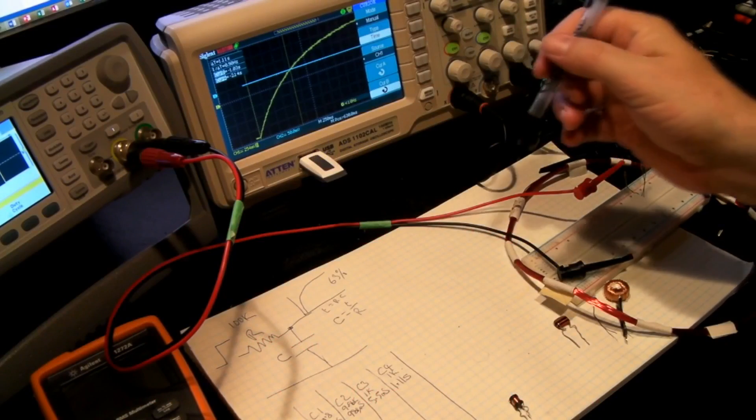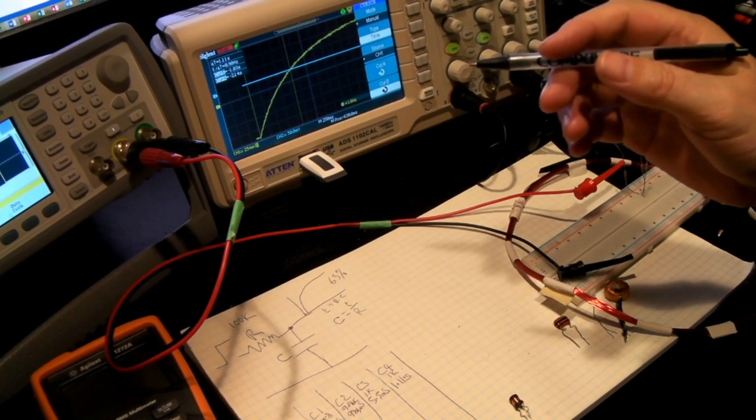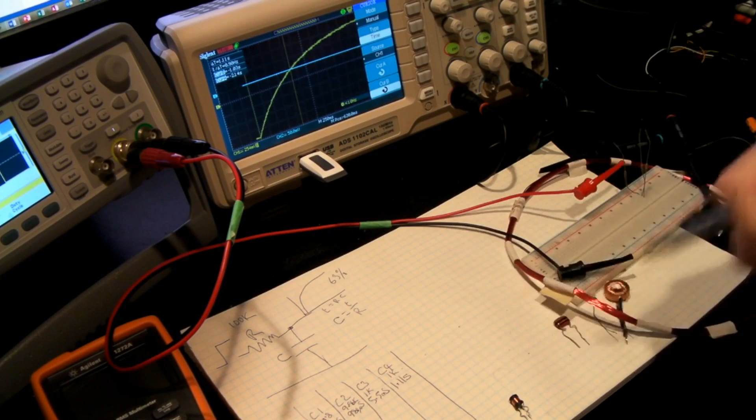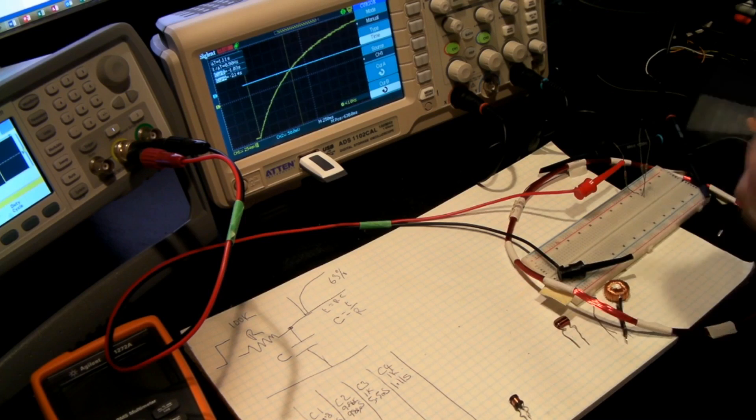What we're going to use for a circuit to check the inductors is we're still going to feed it with a square wave because what we want to do is build what they call a tank circuit with the inductor and a non-capacitor.